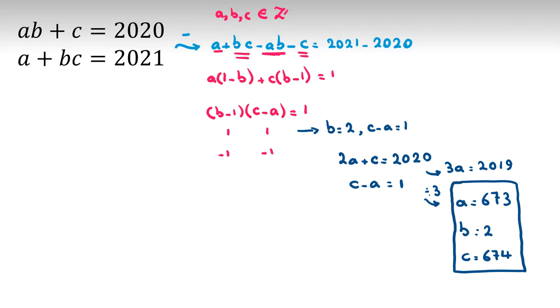Now it's time to check the second case. b - 1 = -1, so b = 0, and c - a = -1. Here, because b is 0, c will be 2020. Let me write it here. And if we replace b with 0 in the second equation, a will be 2021. And we will see c - a = -1. So this is our second answer. We found two answers for this problem.